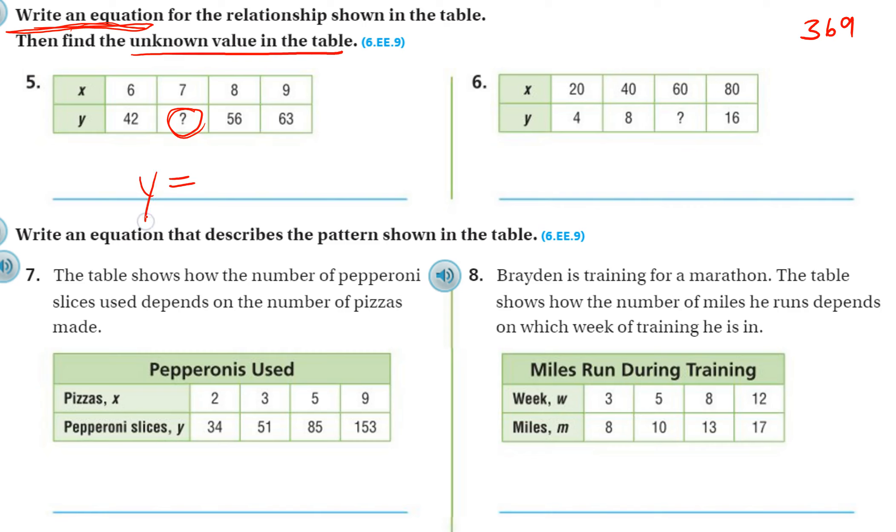So y is going to be my output. It's going to be by itself. And then what am I doing to x each time? What am I doing to this number to get my y value? Okay, so let's see. What could we do to 6 to get it up to 42? Well that's a pretty big jump, so I'm going to assume that we need to do multiplication.